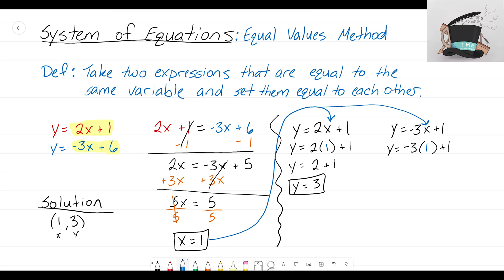You should still get the same answer. So let's see, negative 3 times 1, that becomes negative 3. Oops, that is not a plus 1 over there, that is a plus 6—made a little mistake. So I have negative 3 plus 6, and negative 3 plus 6 also becomes a positive 3. Hopefully you can see here that it doesn't matter which equation you use.